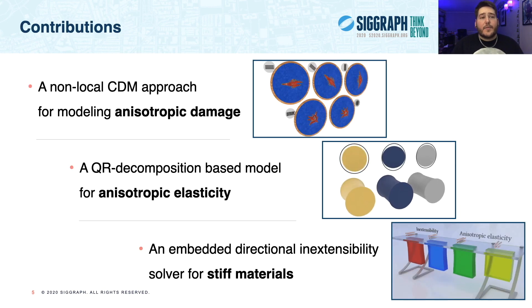So, anisompm is composed of three key contributions. The first is a non-local continuum damage mechanics approach for anisotropic crack modeling, and this includes both an explicit and an implicit discretization. The second is a QR decomposition-based anisotropic constitutive model that is inversion-safe, robust to large deformations, and more efficient than SVD models. And finally, for extremely stiff-fibred materials, we further introduce a novel Galerkin weak-form discretization that enables embedded directional inextensibility.